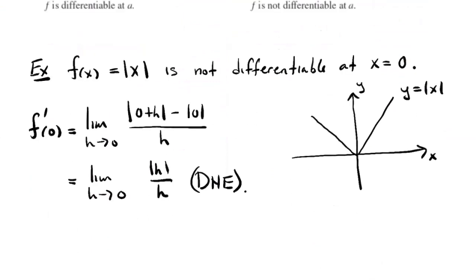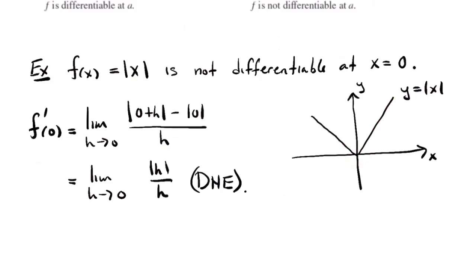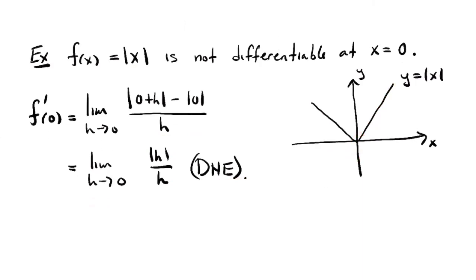The absolute value function has a cusp, so it's not differentiable at the origin — it's differentiable everywhere but the origin. Using the limit definition, the numerator becomes absolute value of h over h. Taking that limit from the right gives 1, and from the left gives minus 1 — so the limit doesn't exist. That's the algebraic confirmation that the absolute value function isn't differentiable at the cusp.